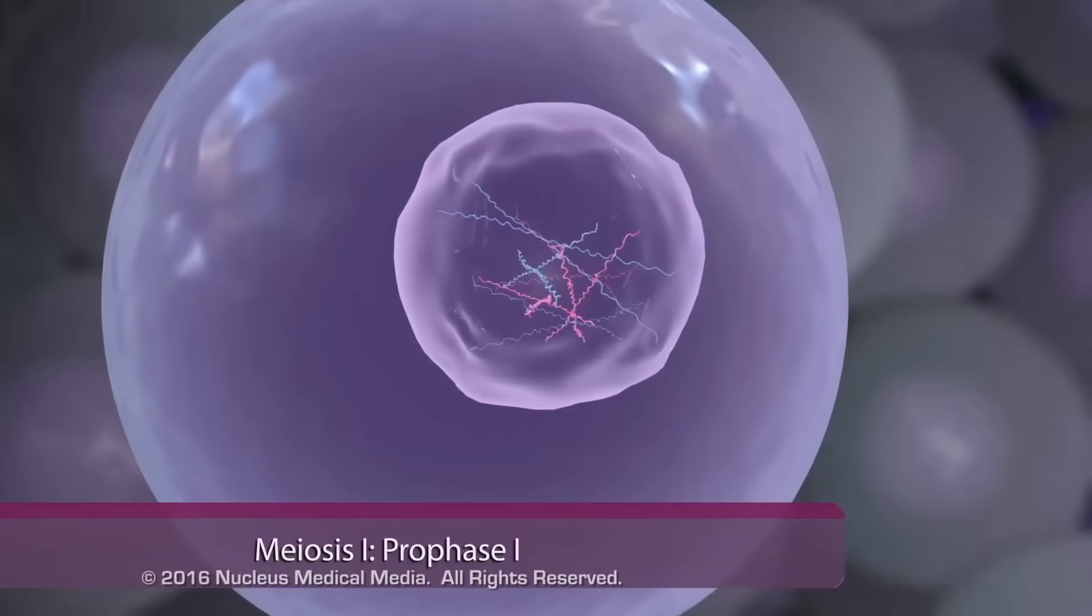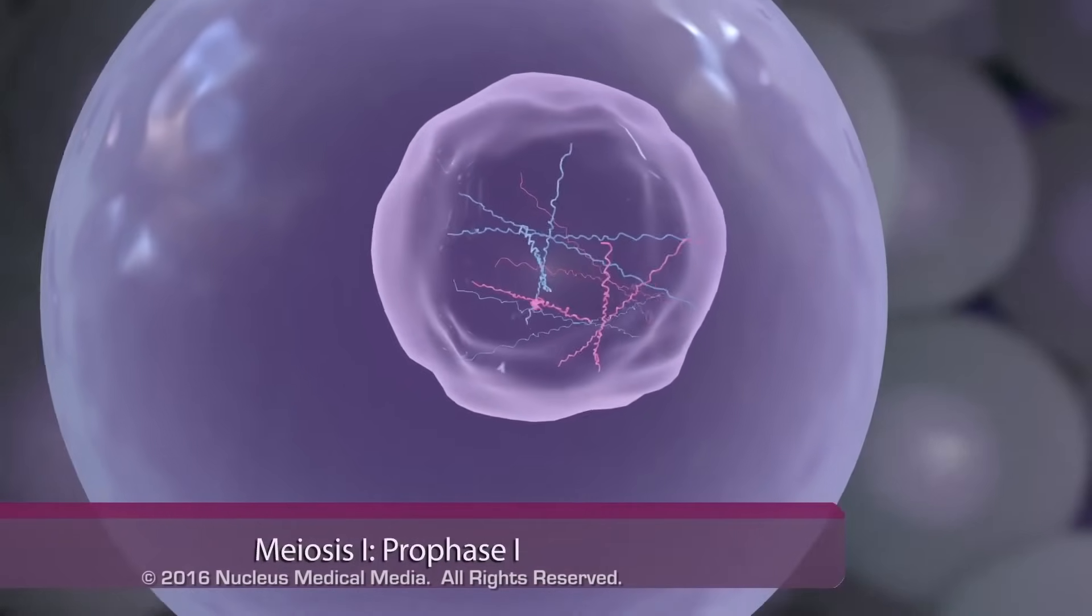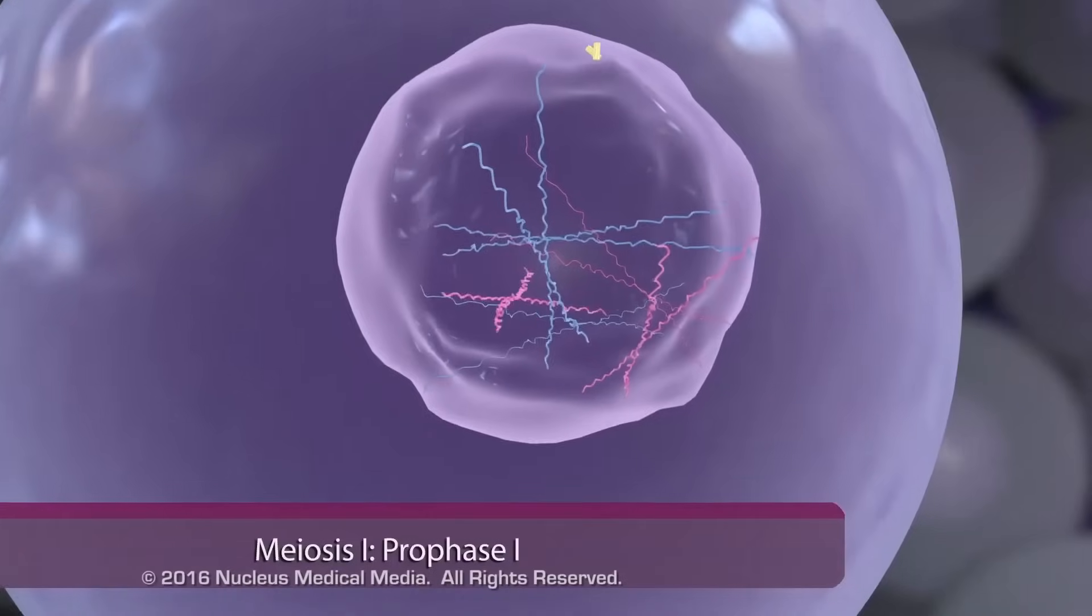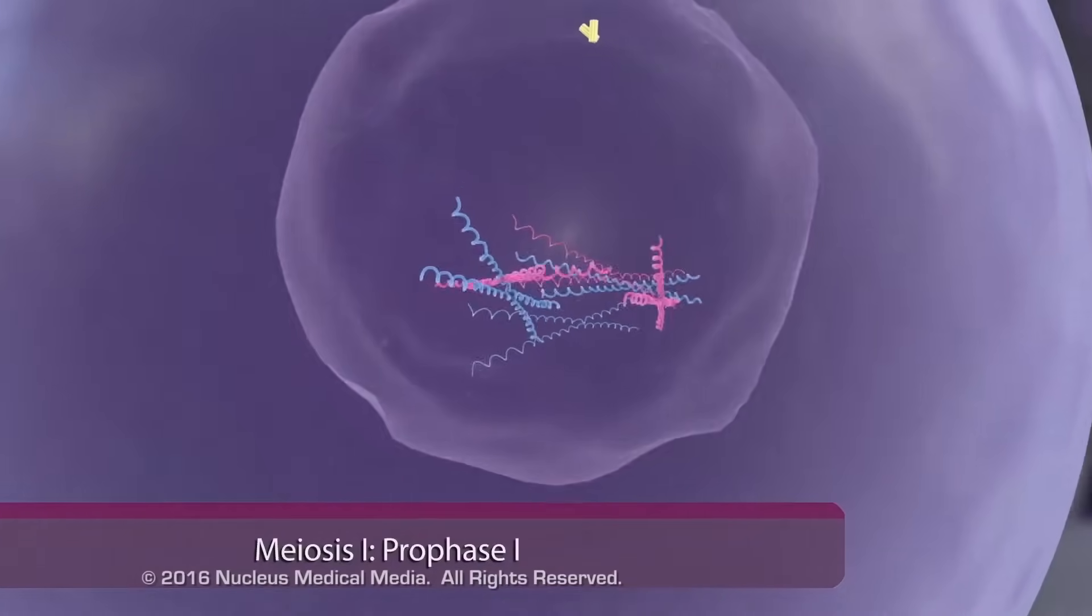After DNA replication, the first cell division, or meiosis I, begins with prophase I, during which chromosomes condense.